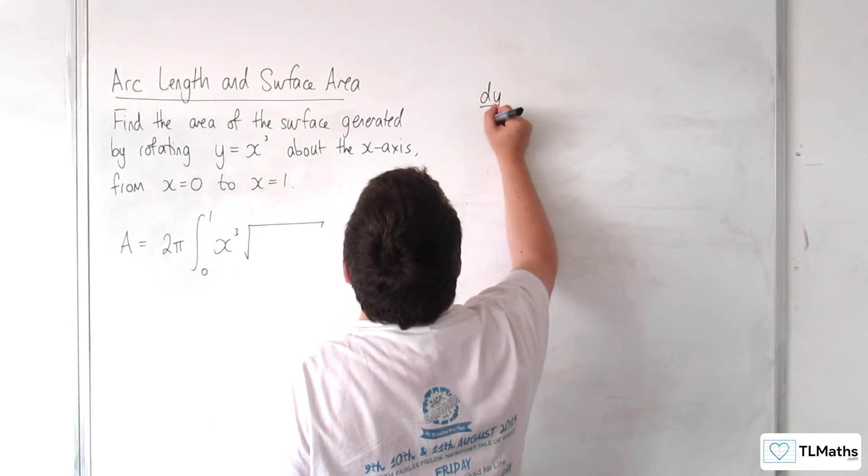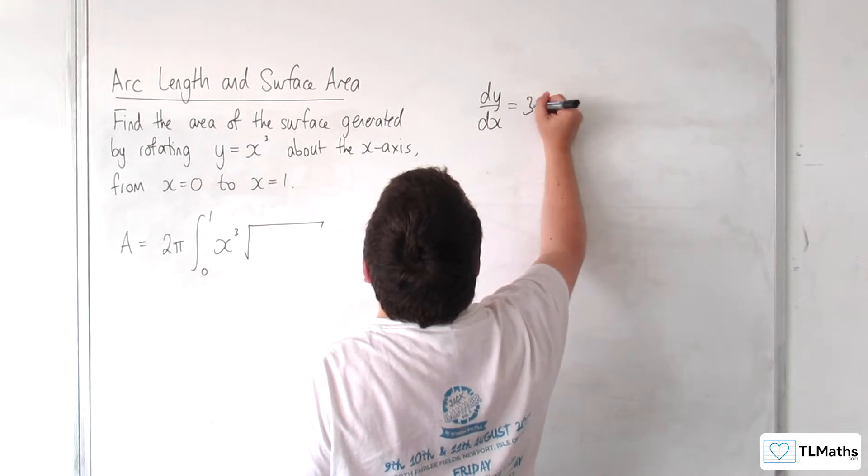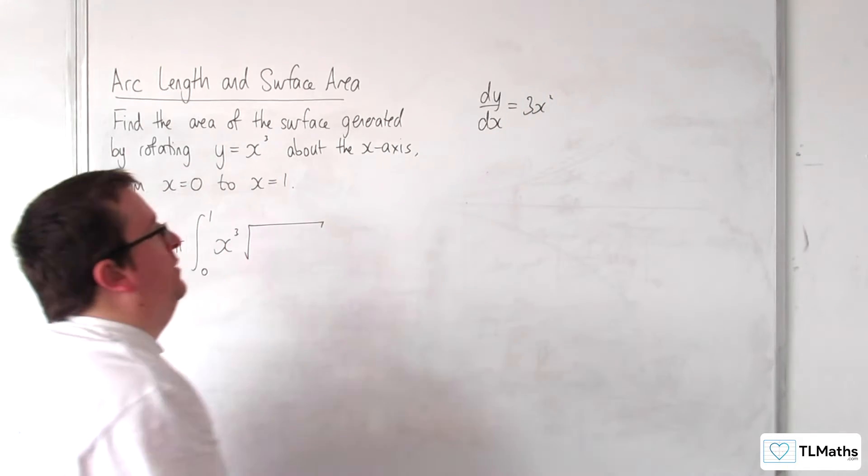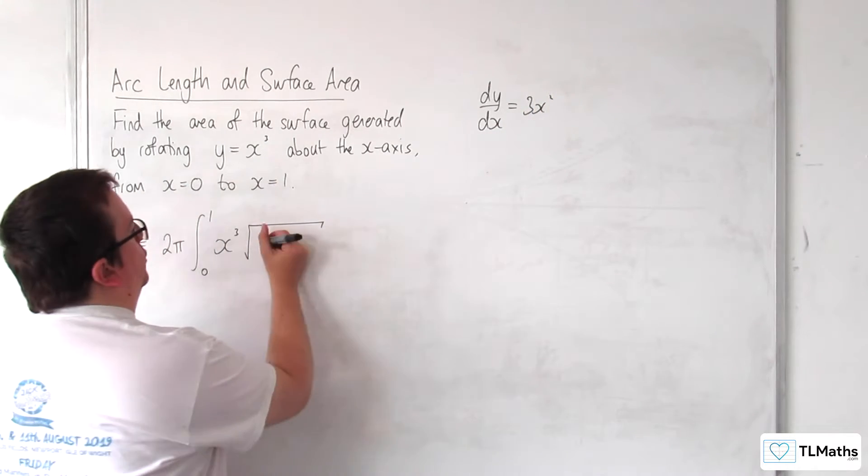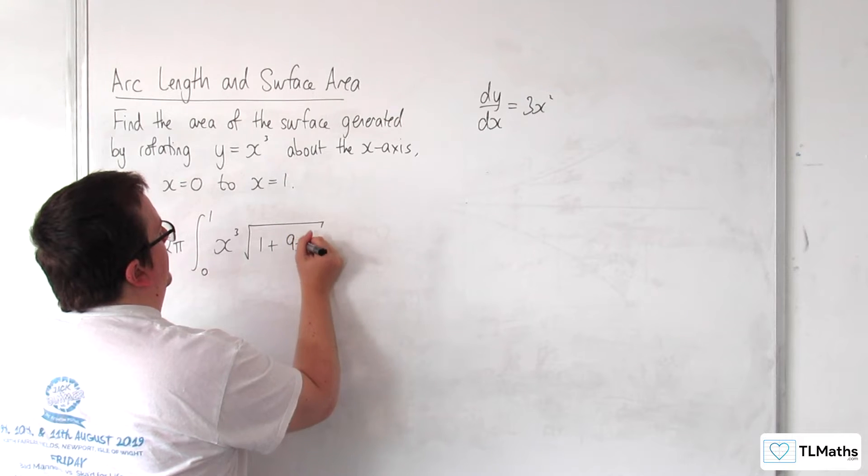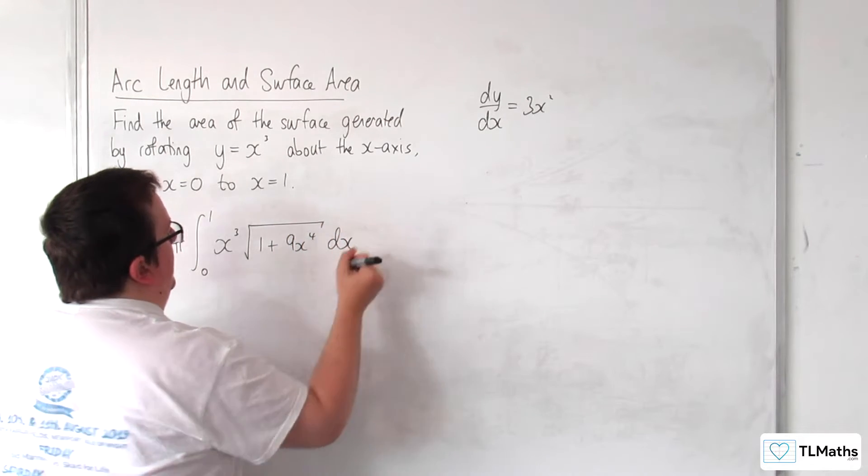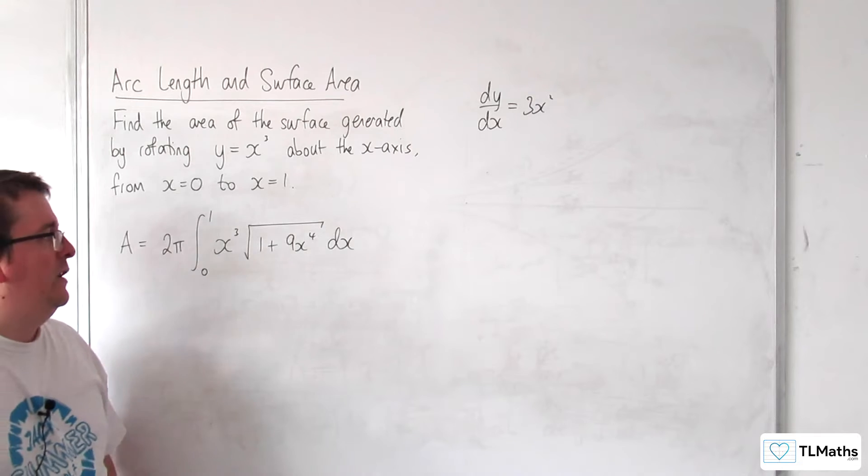So dy by dx is 3x squared, so when I square that, I'm going to get 9x to the 4, so 1 plus 9x to the 4 dx. So this is the integral I need to evaluate.